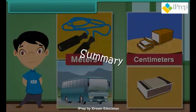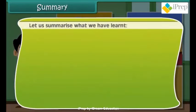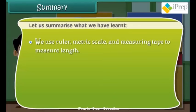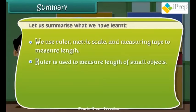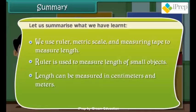Summary. Let us summarize what we have learned. We use ruler, metric scale, and measuring tape to measure length. Ruler is used to measure length of small objects. Length can be measured in centimeters and meters. One meter is equal to 100 centimeters.